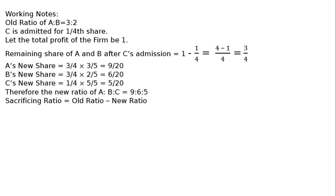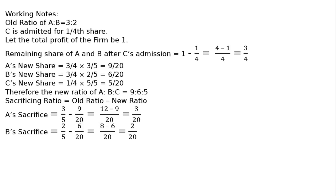Sacrificing ratio equals old ratio minus new ratio. A's sacrifice: 3/5 minus 9/20. LCM is 20, so 12 minus 9 = 3/20. B's sacrifice: 2/5 minus 6/20. LCM is 20, so 8 minus 6 = 2/20. Therefore the sacrificing ratio of A to B is equal to 3 is to 2.